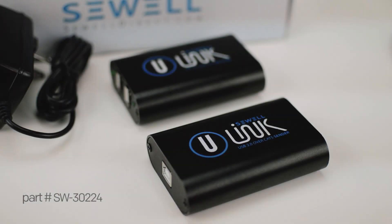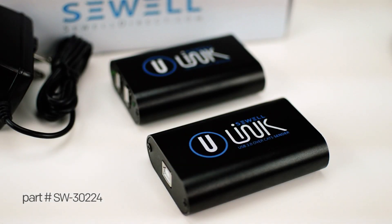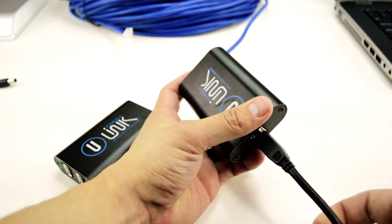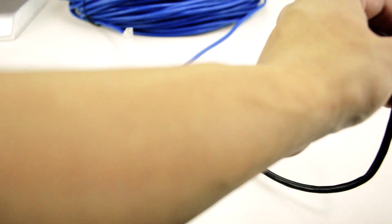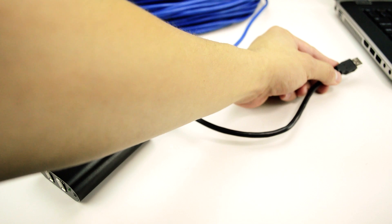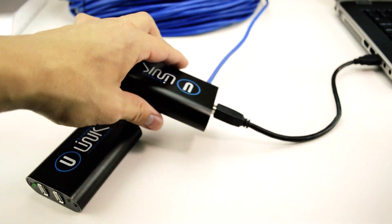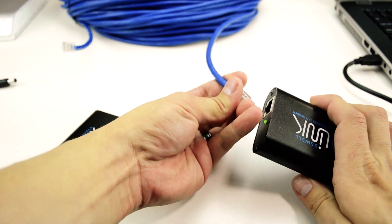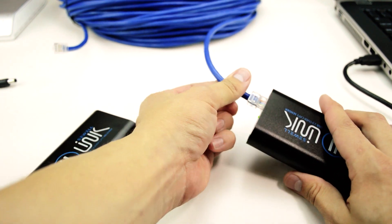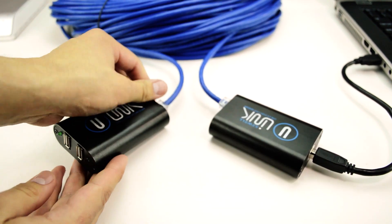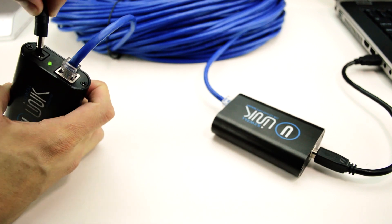With that said, first we will test the U-Link by Sewell. The installation is very easy. First connect the USB cable to the sender unit and the computer. Then connect your CAT 5 or 6 cable to the sender and to the receiver.